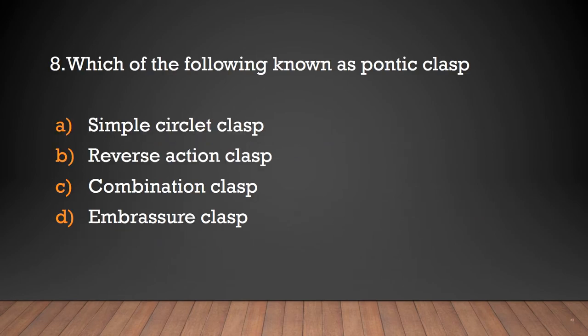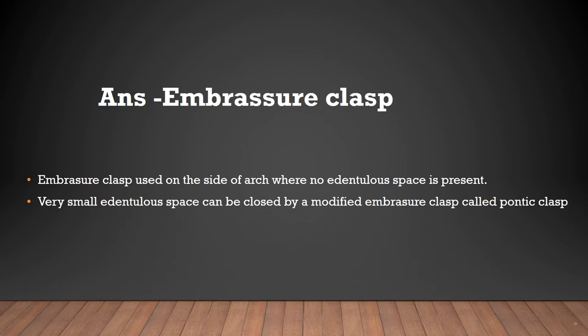Which of the following is known as pontic clasp? Simple circular clasp, reverse action clasp, combination clasp, or embrasure clasp? The answer is embrasure clasp — embrasure clasp is used on a side of the arch where no edentulous space is present. A very small edentulous space can be clasped by a modified embrasure clasp called pontic clasp.